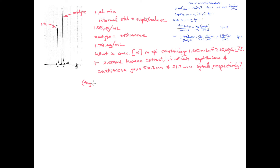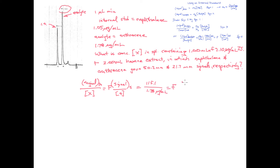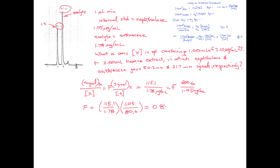Let's apply equation 4 to the standard mixture. The data for the standard mixture allows us to calculate the value of F. The signal for the analyte is 115.1 over the concentration of the analyte, 1.78 micrograms per milliliter, equals F times the signal for the standard, 80.6, divided by 1.05 micrograms per milliliter. Rearranging and solving for F gives us a numerical value of 0.8423.